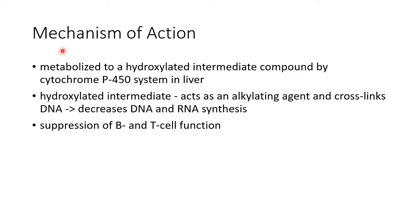Now let us see about the mechanism of action of cyclophosphamide. Cyclophosphamide is metabolized to a hydroxylated intermediate compound by cytochrome P450 system in liver. This hydroxylated intermediate acts as an alkylating agent and cross-links DNA, thereby decreasing DNA and RNA synthesis.